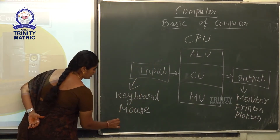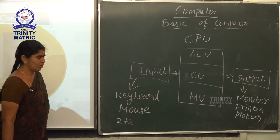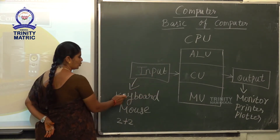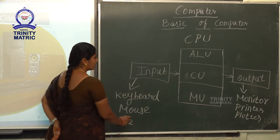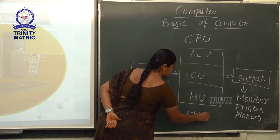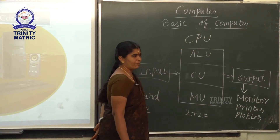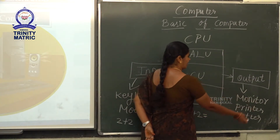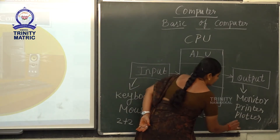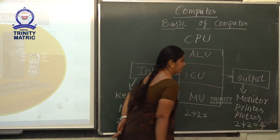With a keyboard or mouse, we can send data to the computer. For example, 2 plus 2 — this data is given to the computer through keyboard or mouse. This data is processed by the CPU. The answer 2 plus 2 is equal to 4 will be displayed on the monitor.